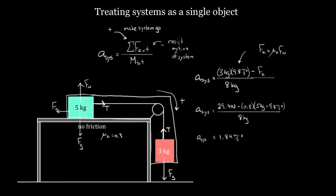But you have to be careful: what this formula really gives you is the magnitude of the acceleration. Playing this game where positive forces make it go and negative forces resist motion gives only the magnitude. Individual boxes have that magnitude, but may have positive or negative acceleration. The five kilogram mass accelerating to the right has a positive acceleration of +1.84 m/s², while the three kilogram mass accelerating downward has an acceleration of −1.84 meters per second squared.